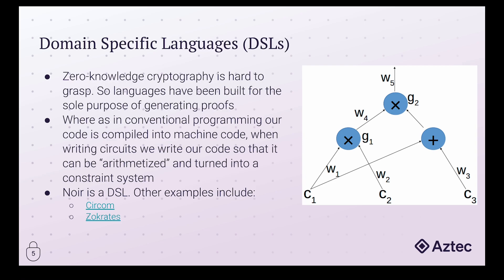As mentioned before, Noir is a DSL, but other examples include Circom, which is short for Circuit Compiler, and also ZoKrates, among many others. Another thing worth noting is that by nature, domain-specific languages are very limited in their syntactic structure and what they support doing — that's because they are a specialization language solely crafted for the purpose of generating zero-knowledge proofs.